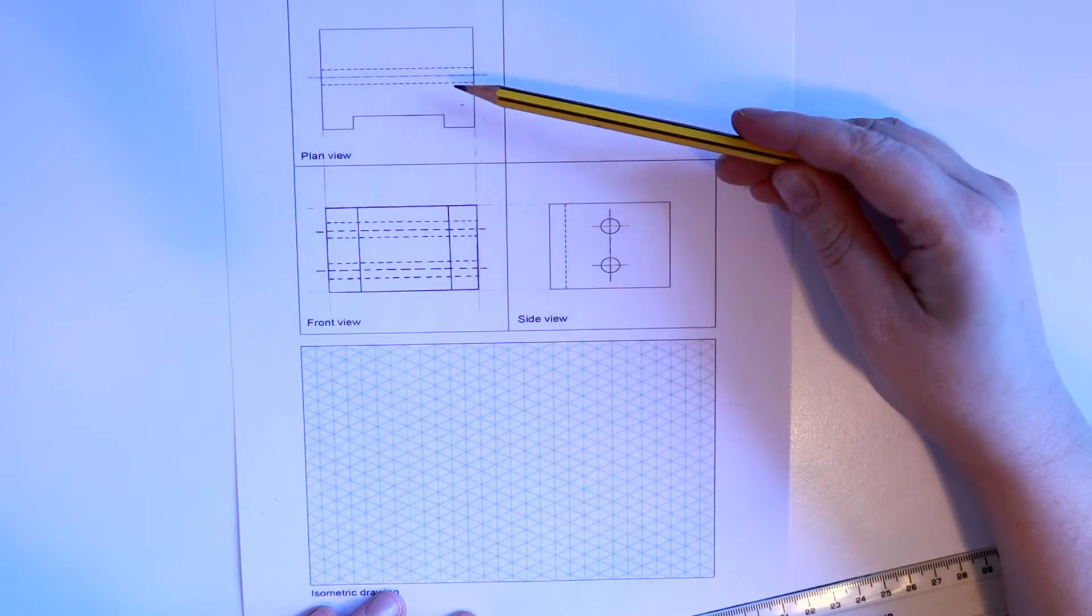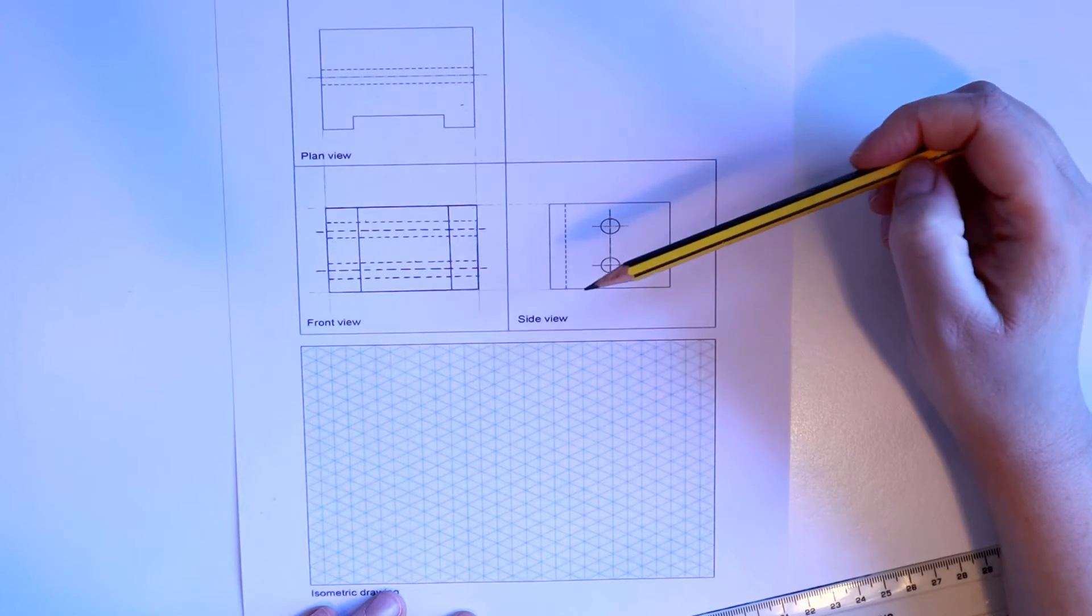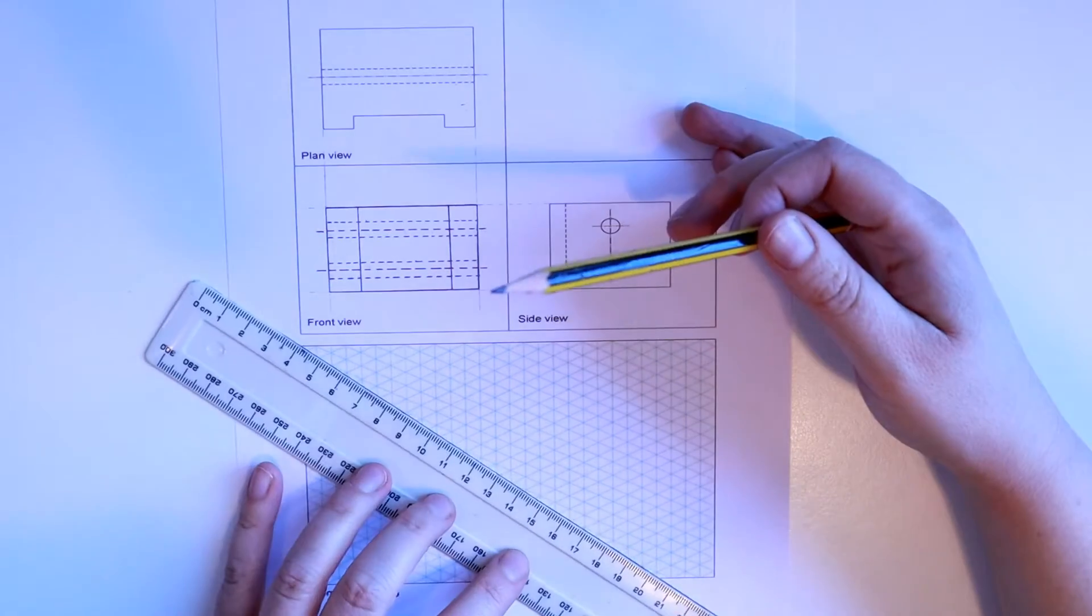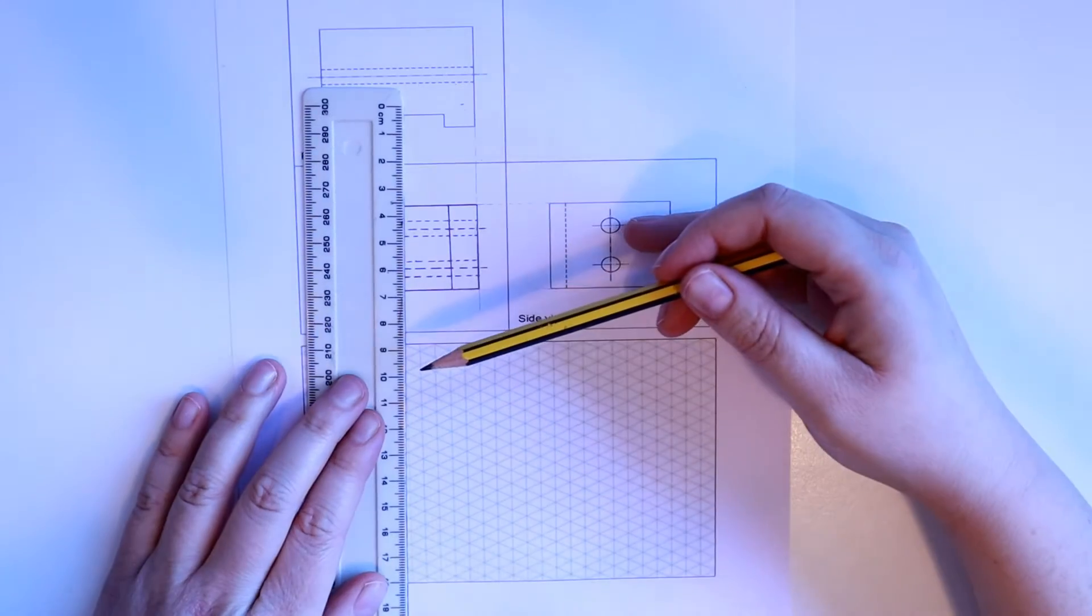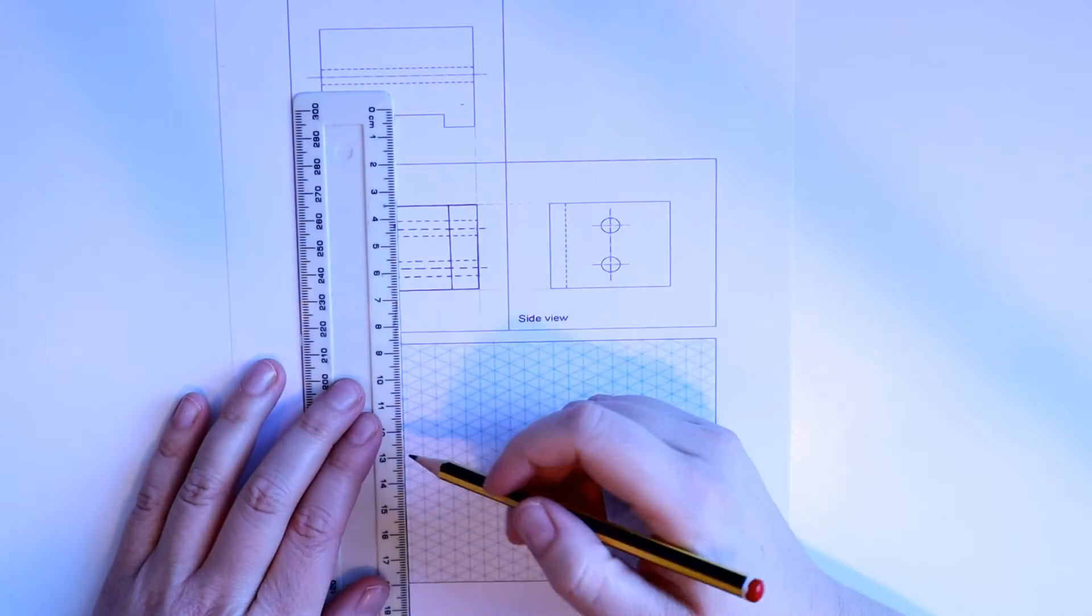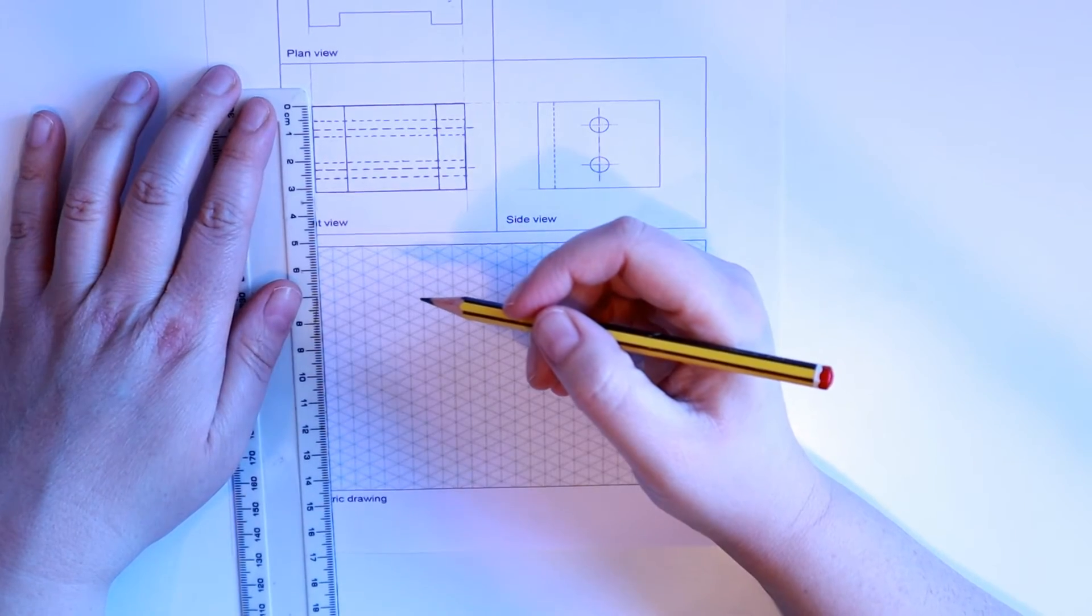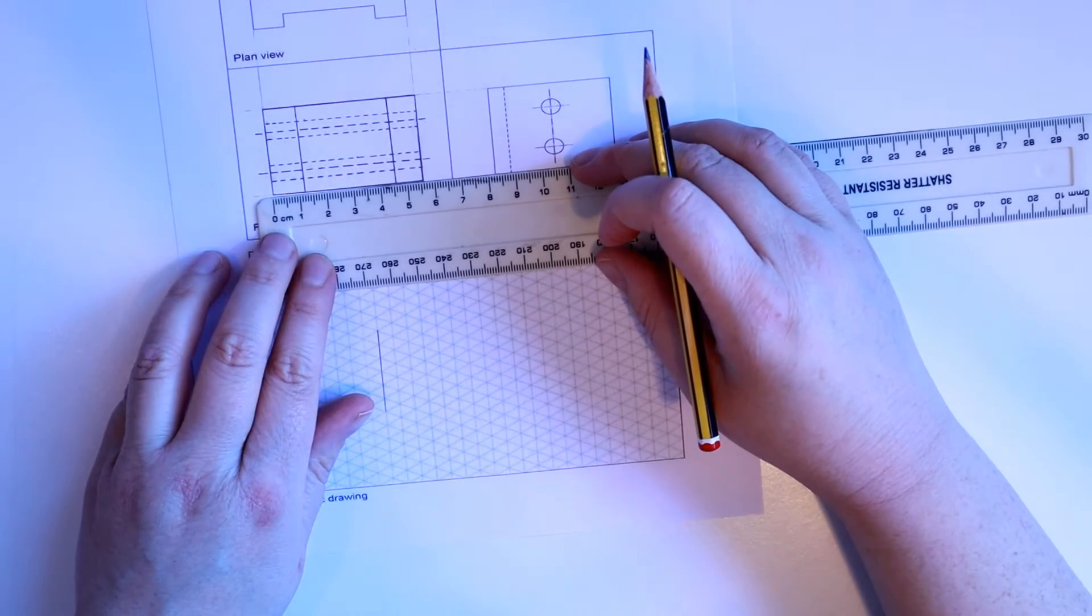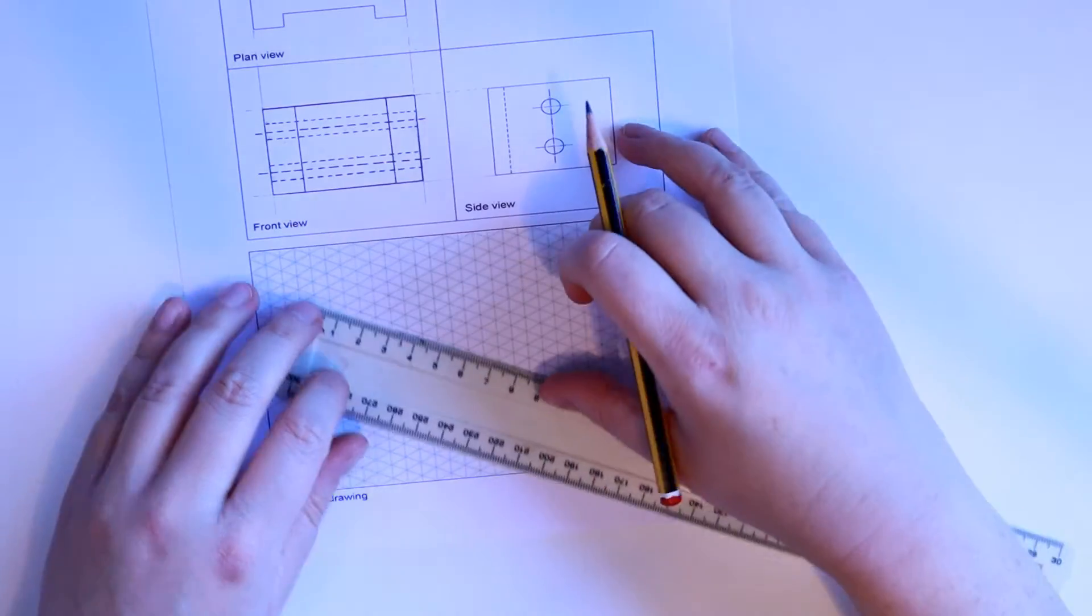Now you know what the plan view, the front view and side view look like. So you need to try and think about what that will look like as a 3D drawing. I'm going to start by drawing an isometric rectangle. So I just need to measure the box, it's 30 millimetres. And the length of it is 55 millimetres.